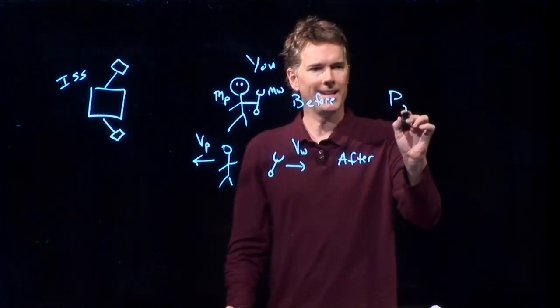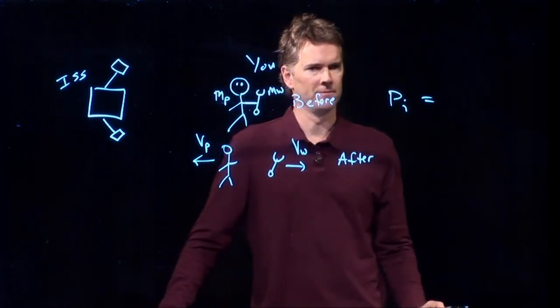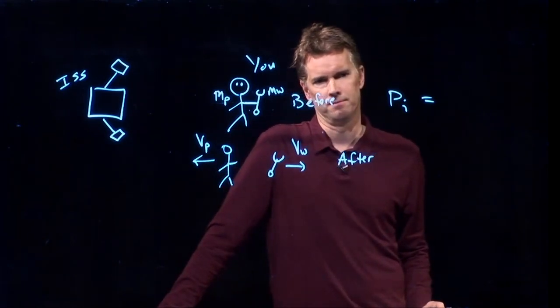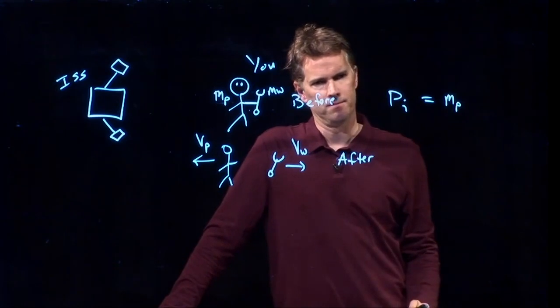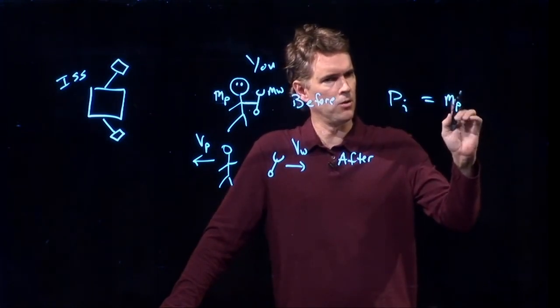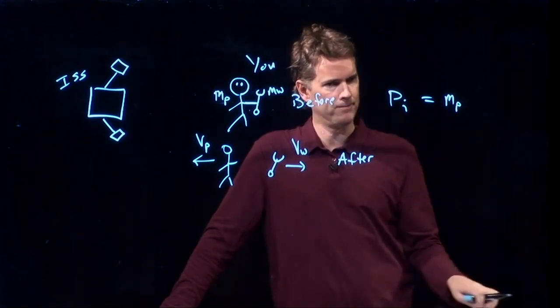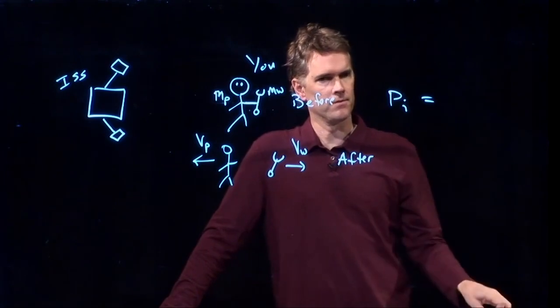What is the initial momentum of the system here, Alex? It's going to be the mass of the person. Okay. That's going to equal the mass of the... Well, remember, momentum is mass times velocity. So the mass of the person times what? Times zero. Times zero. And velocity, even the velocity.